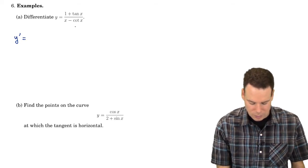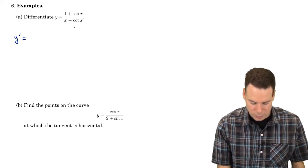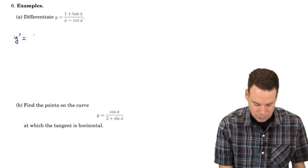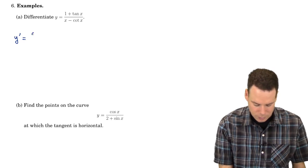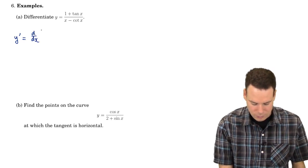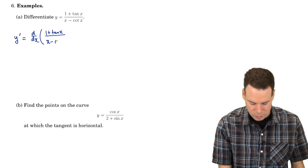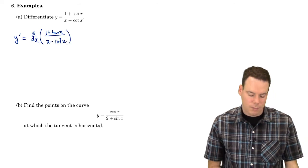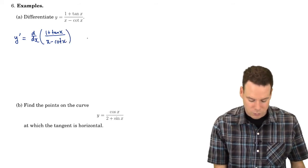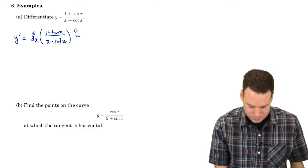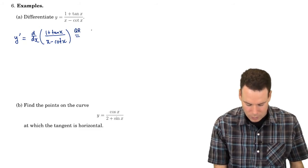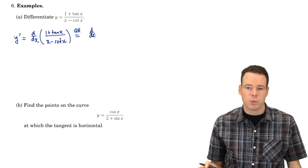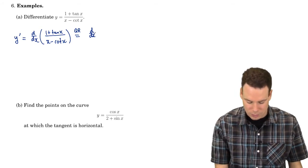Differentiate (1 plus tan x) over (x minus cotan of x). So what is the derivative? Well, we have to think of how this thing is built up: 1 plus tan of x over x minus cotan of x. That's built up as the ratio of two functions, so we're going to use the quotient rule here. We're going to try not to do everything all in one step — I'm just going to apply the quotient rule and see what it tells me.